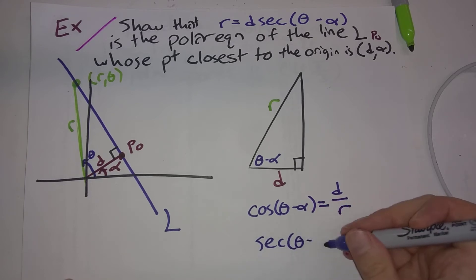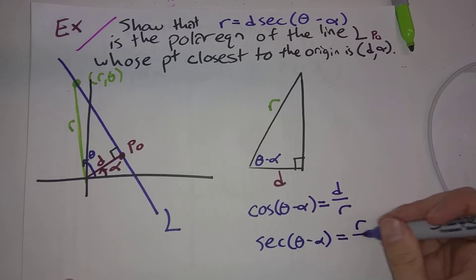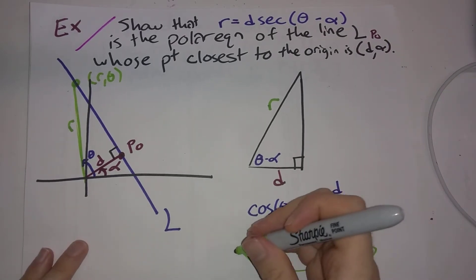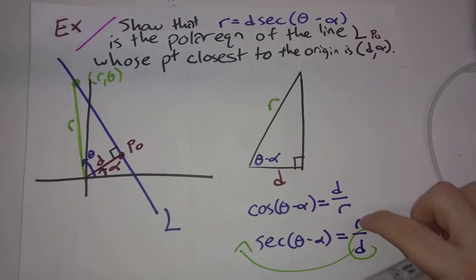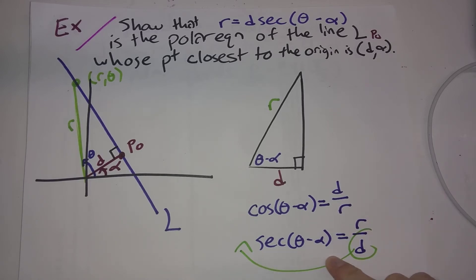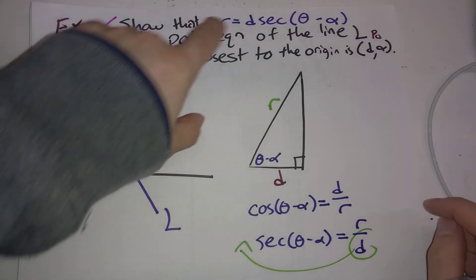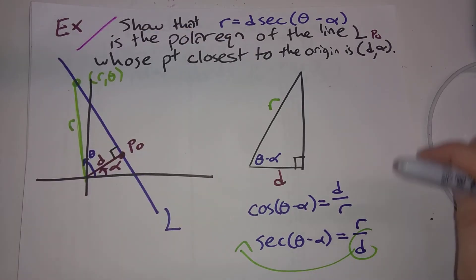So secant of theta minus alpha is R divided by D. And if we take this D and move it to the other side, we get exactly R is equal to D secant of theta minus alpha. And that's exactly what we're trying to show here.